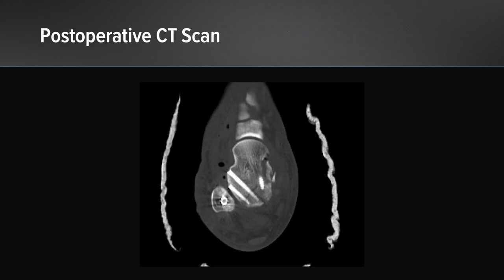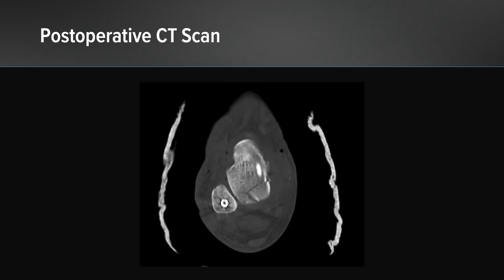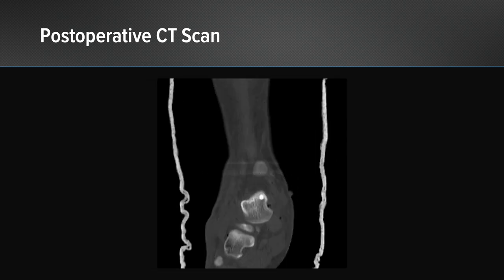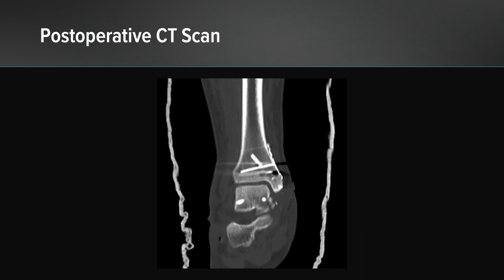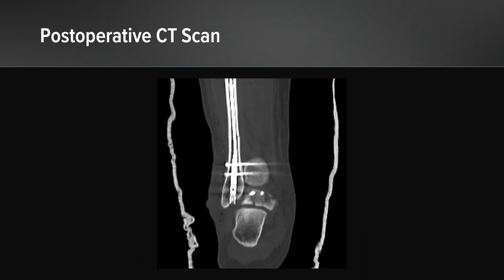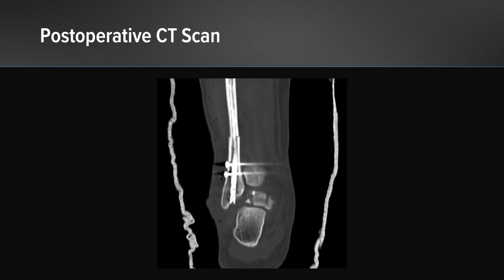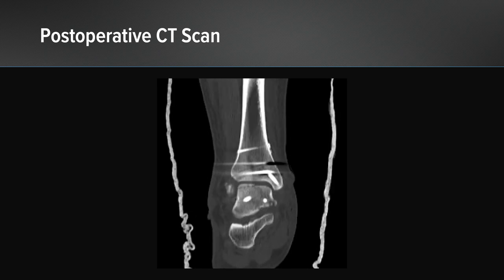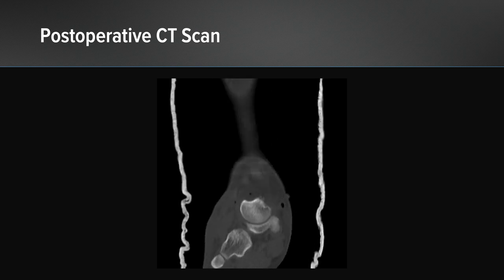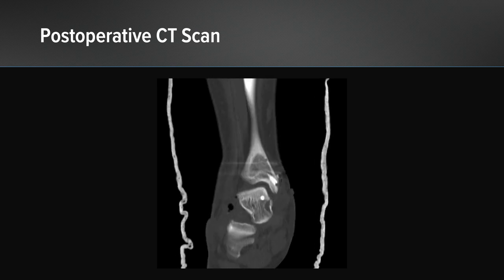Postoperatively, a CT scan was obtained to assess our reduction and fixation of the talar body fracture. The axial imaging shows appropriate reduction of the talar body. In the coronal imaging we see the articular surface recreated with appropriate fixation of the fracture fragments, with the posteriorly extruded fragments reduced and fixated.